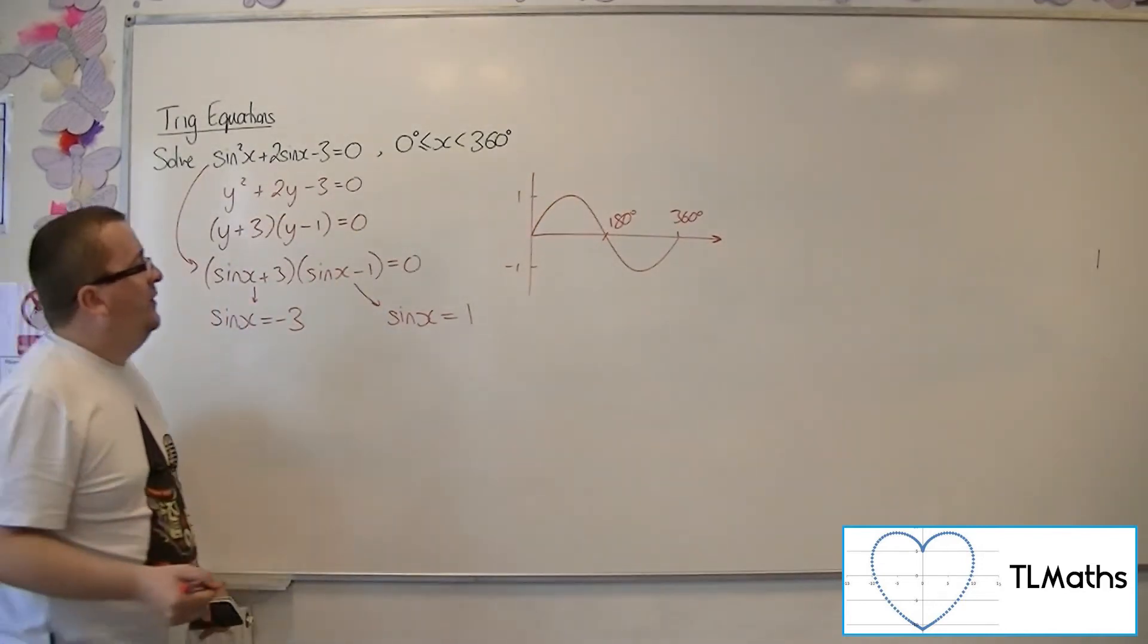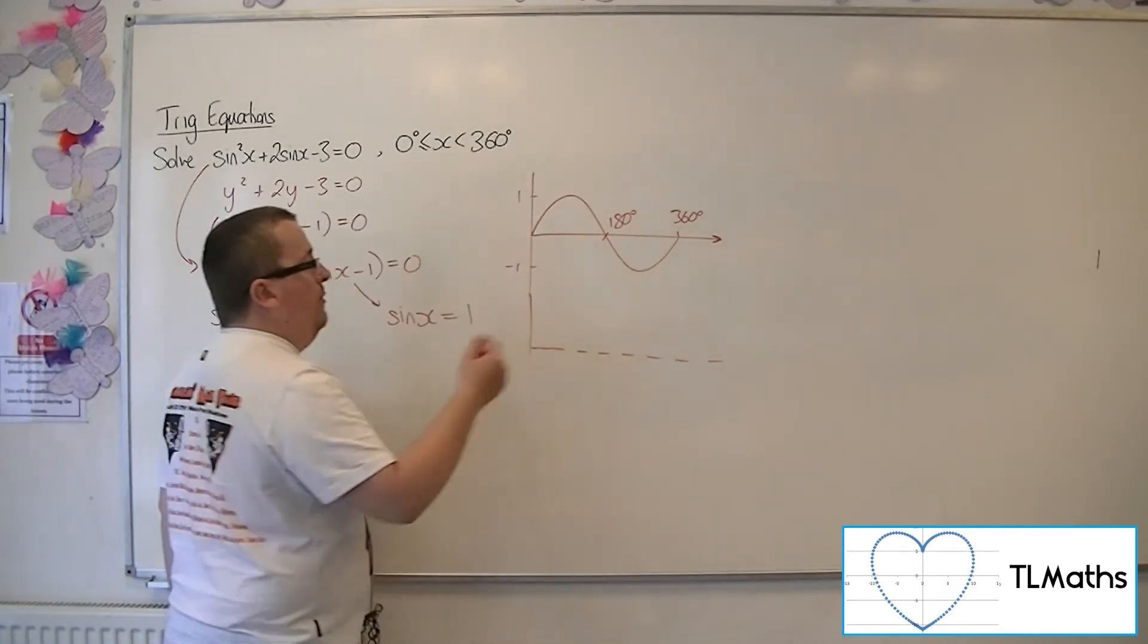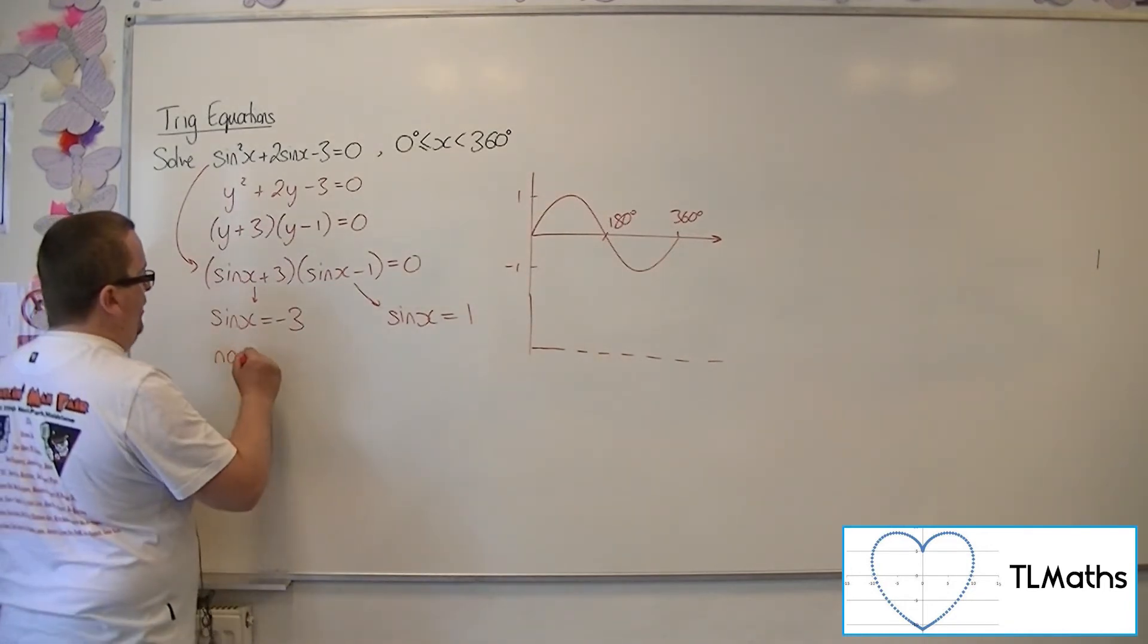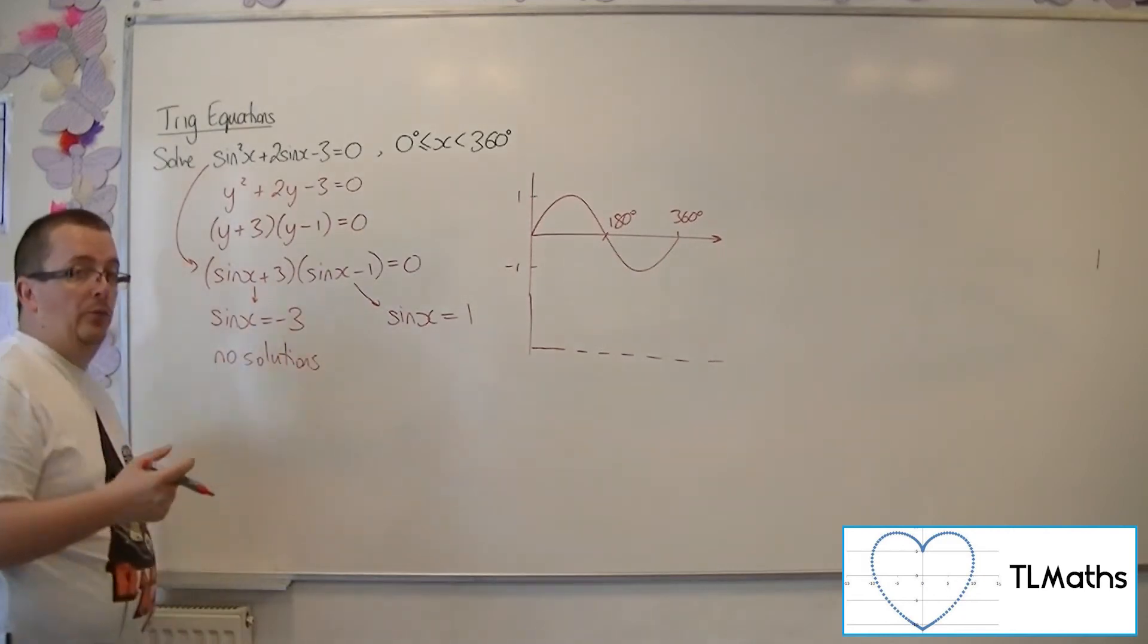So if I'm looking at sine x is equal to minus 3, minus 3 is all the way down here, and so that would never cross the sine curve. And so there are no solutions to this equation of sine x equals minus 3.